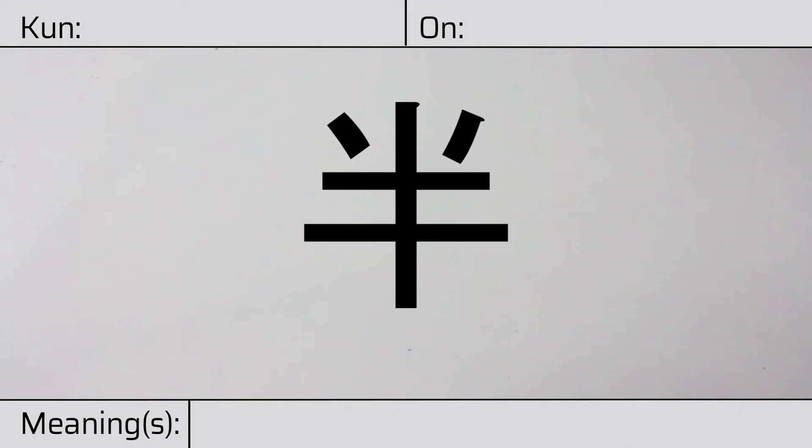Welcome to this lesson on Japanese kanji. Today, we'll be discussing this character. This kanji has a kunyomi, or Japanese reading of naka, and it has an onyomi, or Chinese reading of han.